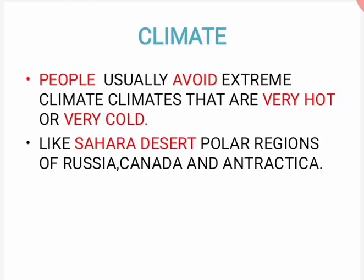Next is climate. People usually avoid extreme climates — very hot or very cold. Jahan par bahut zyada garmi ya bahut zyada thandi hoti hai, log wahan rehna pasand nahi karte. Jaise ki Sahara Desert — wahan log bahut kam rehna pasand karte hain. Log wahan rehte hain jahan climate average hota hai — na bahut zyada na bahut kam.